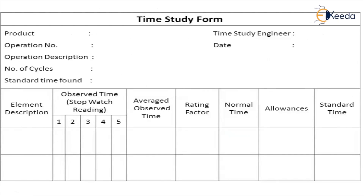This is the time study form used in companies. It records who is conducting the study, the date, the product, the operation, number of cycles, and the time. You go through each element with its description. The job is divided into many elements, and for each element you record the readings from multiple observations, calculate the average, then apply the rating factor to reflect how important and difficult the job was. Adding the rating factor gives you the normal time, and adding the allowances gives you the standard time.